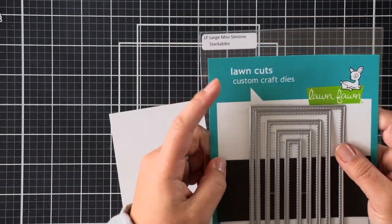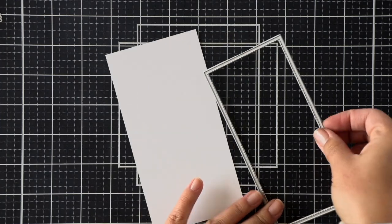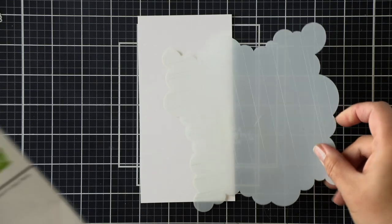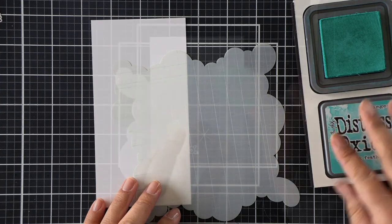For now, our images are ready to go. I am just going to work on our background panel now. I've got the new large mini slimline stackables die here, and I'm going to use the largest die. It's three inches by six inches and is perfect for a matting on a six and a quarter by three and a quarter card base.